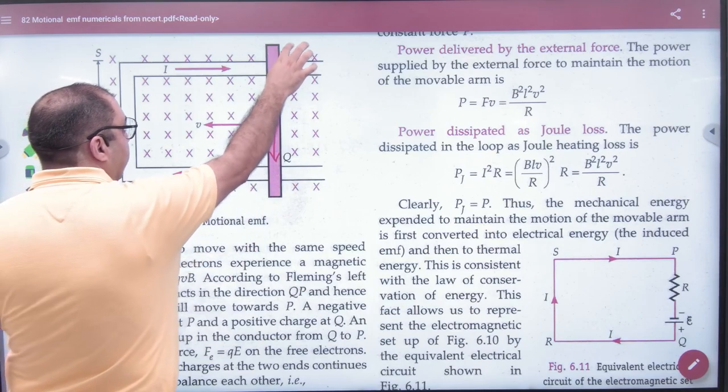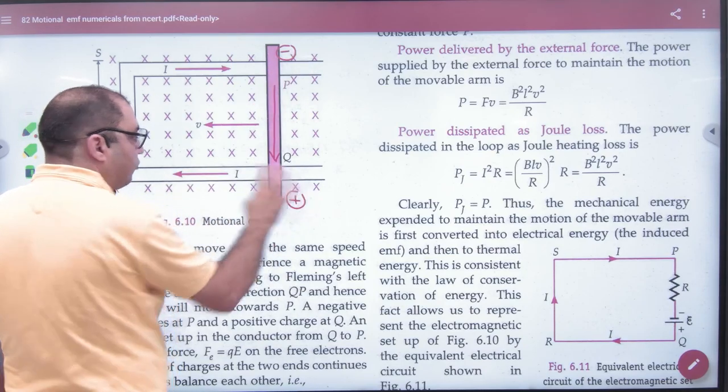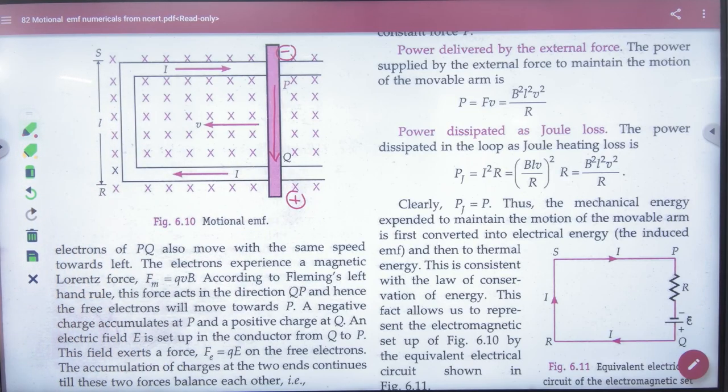If the current will come from Fleming's rule, then it will be negative and positive. In the EMF, it will be negative and positive. Individual current is from negative to positive. So, do it.